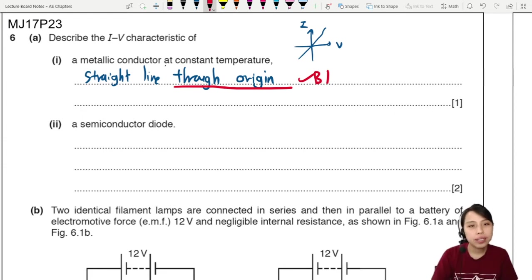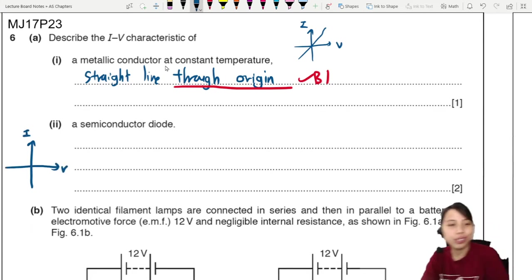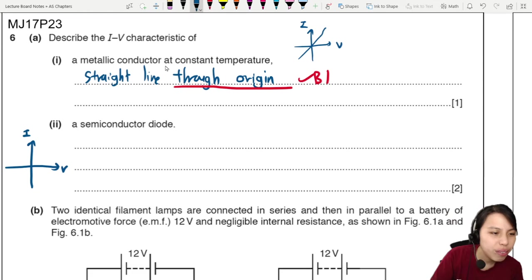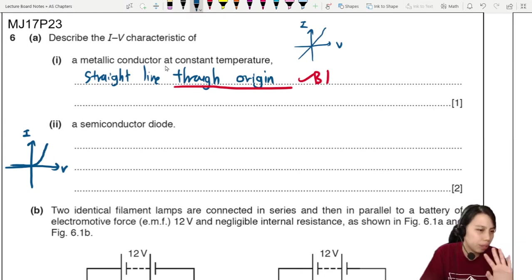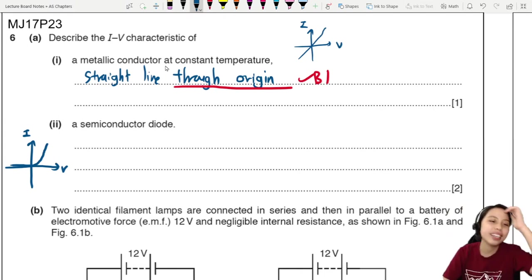Then we go on to a diode, semiconductor diode. This one, the curve is a bit different. Remember how the curve looks like? You need to be able to remember that in order to explain the graph. So for semiconductor, as we mentioned in the previous theory video, you start off at a very chill low level and then suddenly you go up.